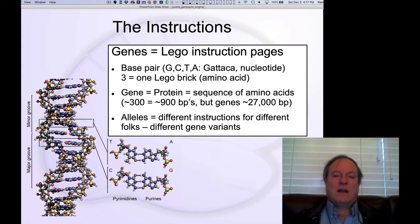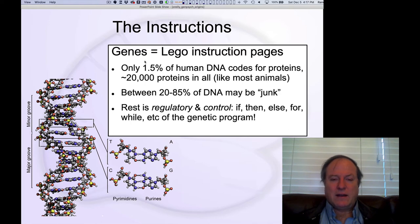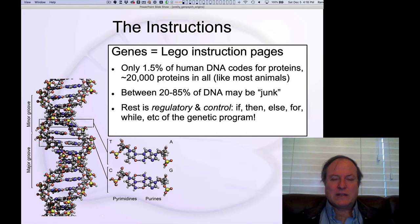An allele is just how any of these base pairs may differ across a gene — one allele versus another basically means a different variant of this genetic sequence in a particular gene. Only 1.5% of human DNA codes for proteins — a tiny percent is these basic building blocks. Overall, in terms of quantity, that's about 20,000 different types of protein, and this is very consistent across most forms of life. We don't really differ much, just like those Lego constructions.